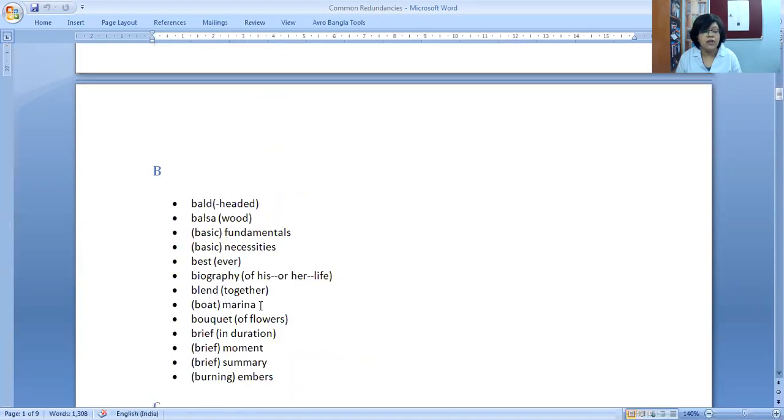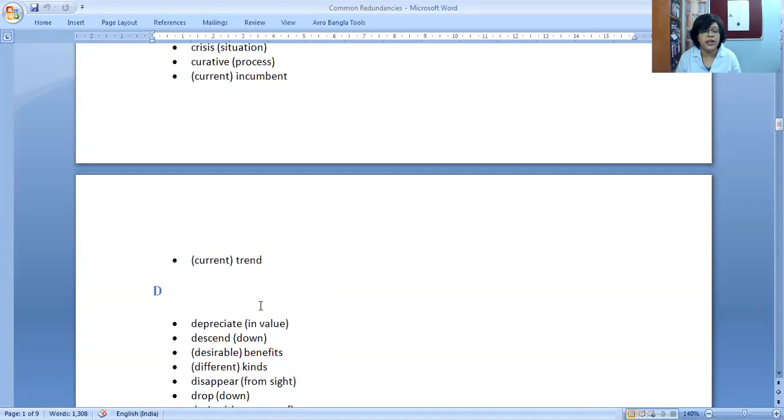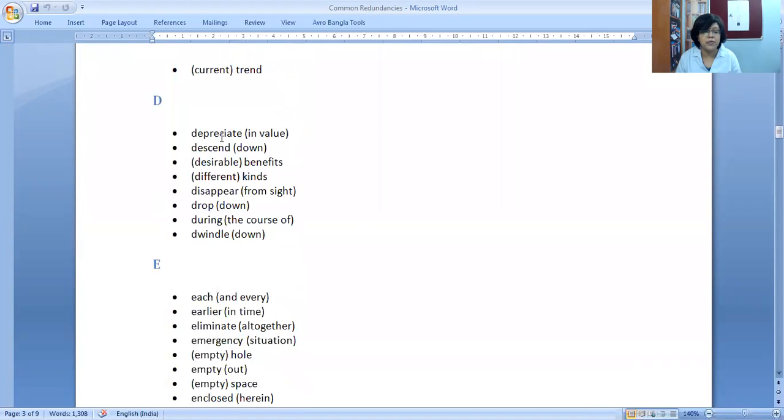Add up. These words we often use but these are all redundant words. Depreciate in value - appreciate means the value to go down. Descend means to go down. Desirable benefits - benefits mean something which is desirable and which will be helpful.